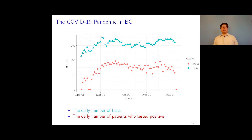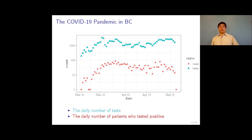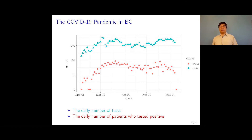Here is the COVID-19 pandemic in BC. The red dots show the number of diagnosed cases each day, and the bluish dots are the number of tests given out each day. You can see the two curves are roughly proportional. The y-axis uses a log scale, meaning the magnitude increases — from 0, 1, 10, then 100. In this scale, a straight line corresponds to exponential growth. At the beginning of the outbreak, the dots line up along a straight line, meaning the outbreak is roughly exponential.